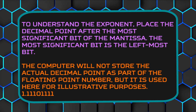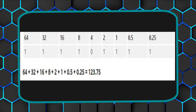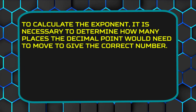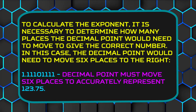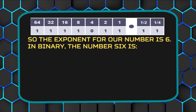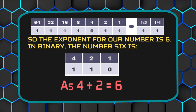The computer will not store the actual decimal point as part of the floating point number, but in this example it is used for illustrative purposes. So, as you can see: 1.1, 1, 1, 0, 1, 1, 1, 1. To calculate the exponent, it is necessary to determine how many places the decimal point would need to move to give the correct number. In this case, the decimal point would need to move 6 places to the right to accurately represent 123.75. So, the exponent for our number is 6 in binary. The number 6 is 4 + 2 = 6.